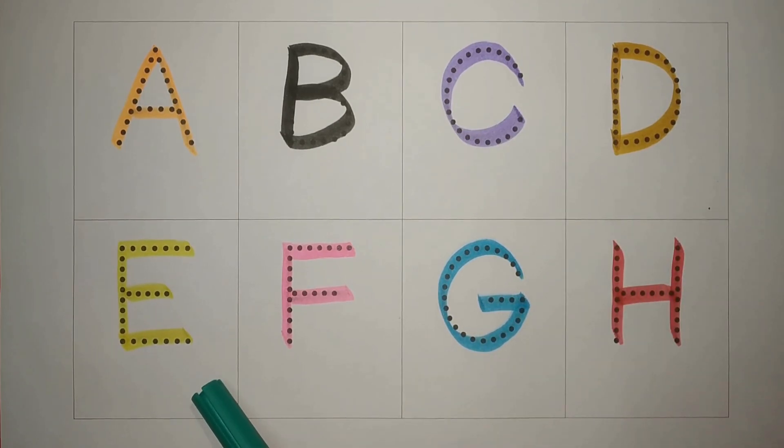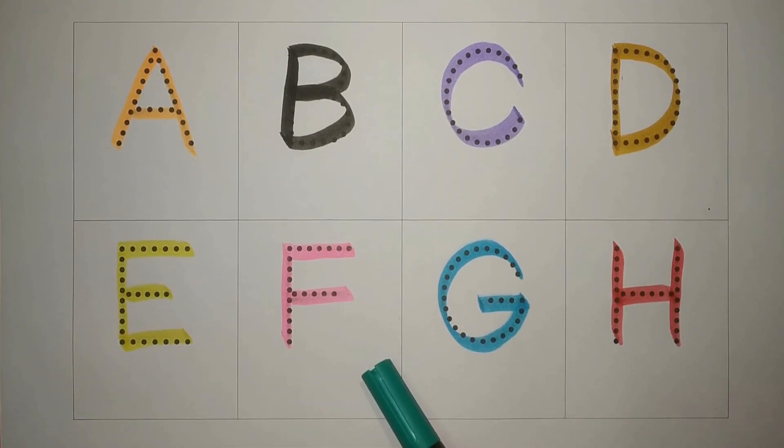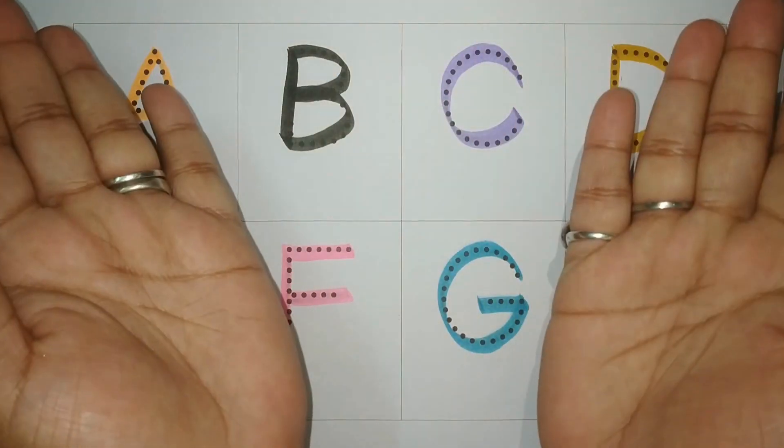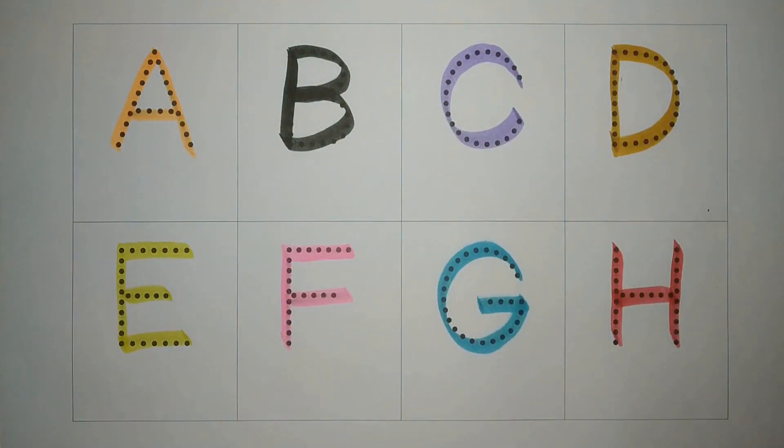E, yellow, E for elephant, F, pink, F for fish, G, blue, G for grapes. And H, red, H for heart, simple. Chalo kal milte hai.